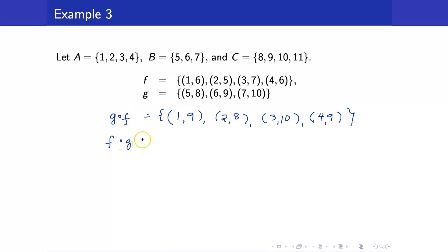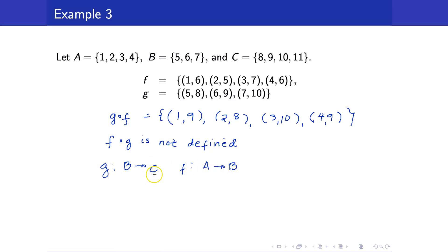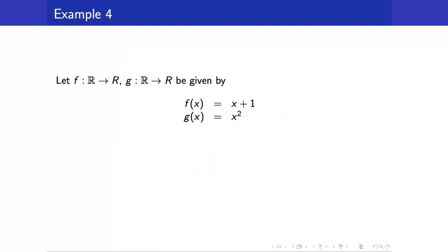Take note that f circle g is not defined — it's not even possible to get this, because g is from B to C whereas f is from A to B. The codomain of g is not the same as the domain of f. Now suppose we have two functions f and g defined by the following. We compute f circle g and also g circle f.